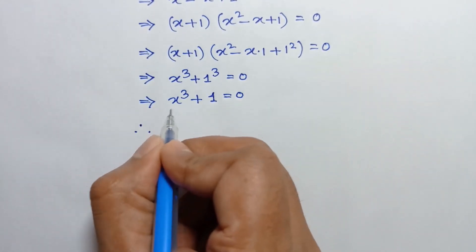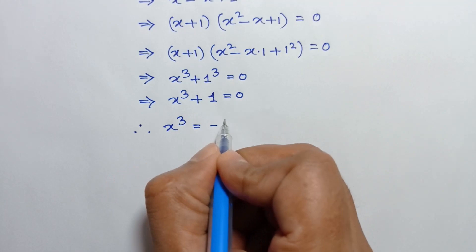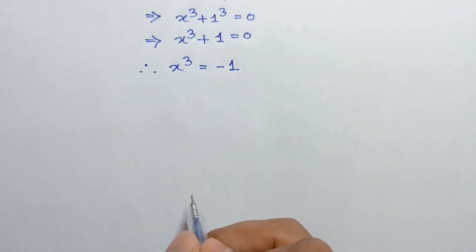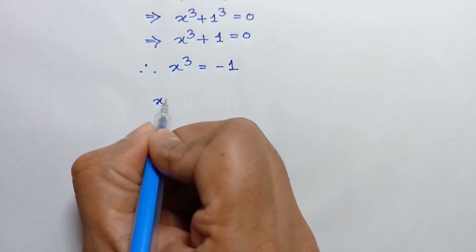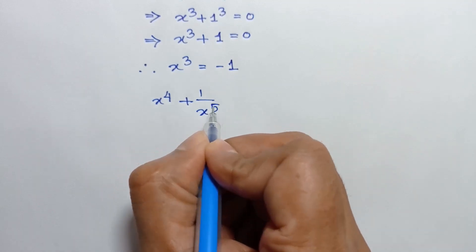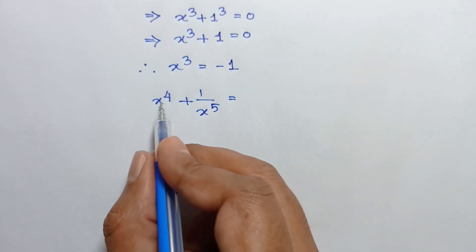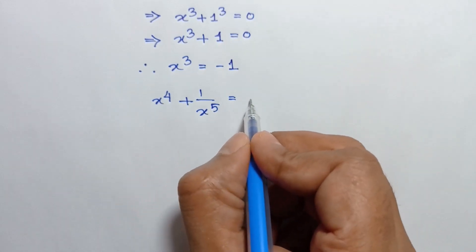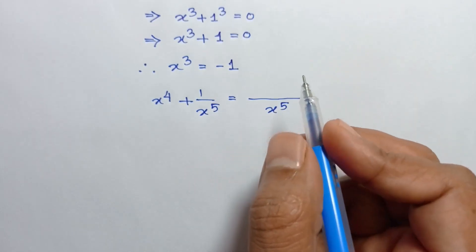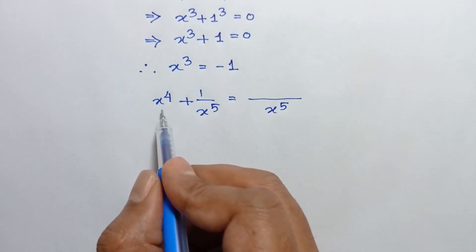So the value of x cubed is equal to negative 1, taking the 1 to the right side. Now x to the power 4 plus 1 over x to the power 5 — the LCM of 1 and x to the power 5 is x to the power 5, so x to the power 5 divided by 1 is x to the power 5.